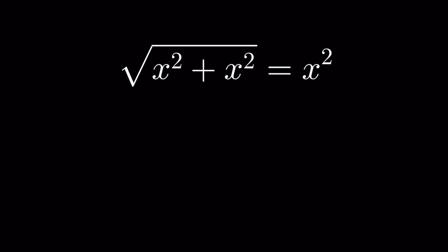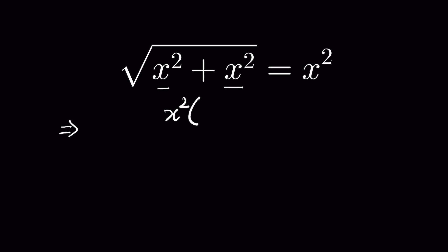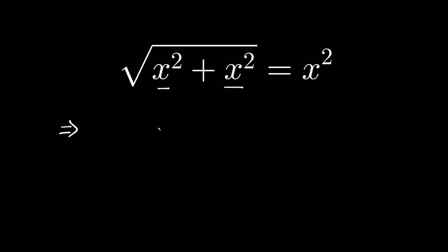We have to find the value of x, given that √(x² + x²) = x². Let's solve this. x² + x² equals 2x². We can take x² common and write x²(1 + 1), and since 1 + 1 is 2, we get x² times 2, or 2x². Therefore it will be √(2x²) = x².